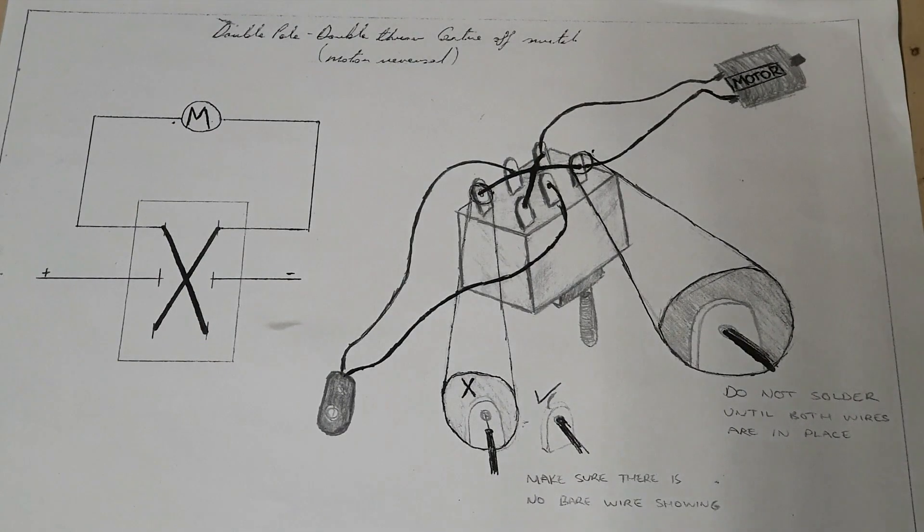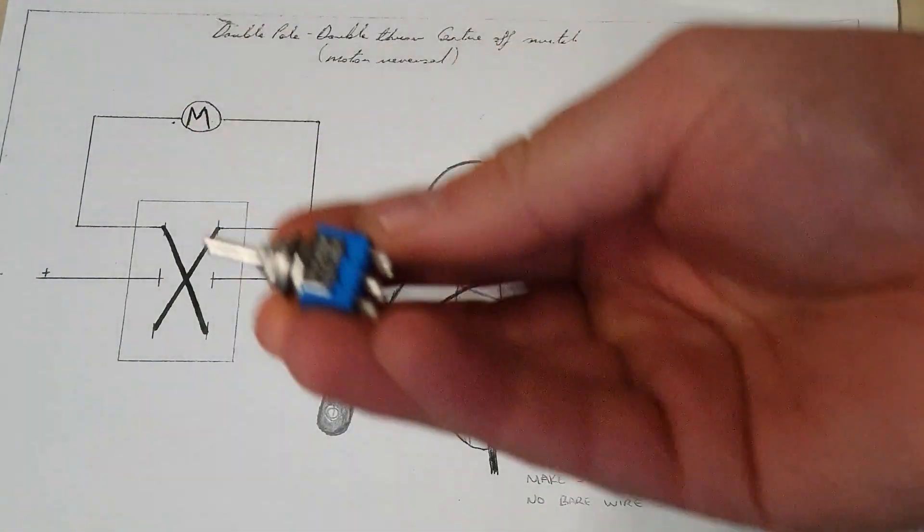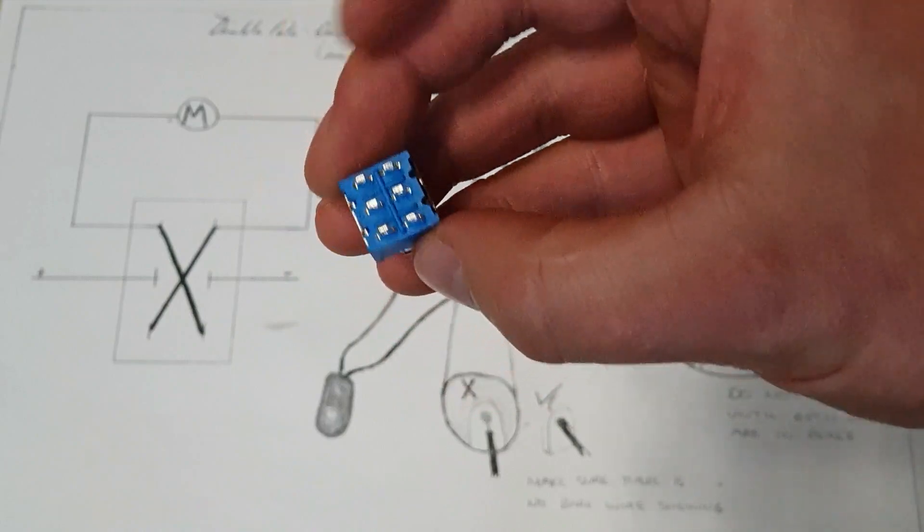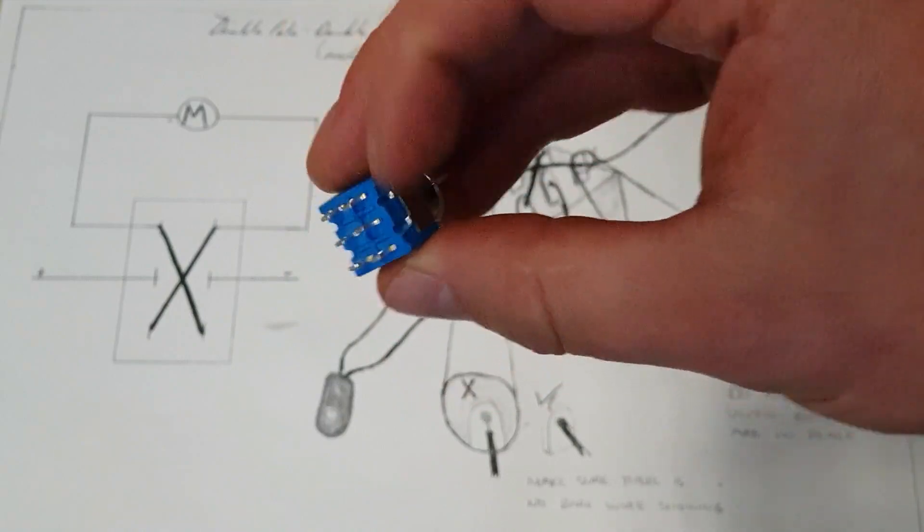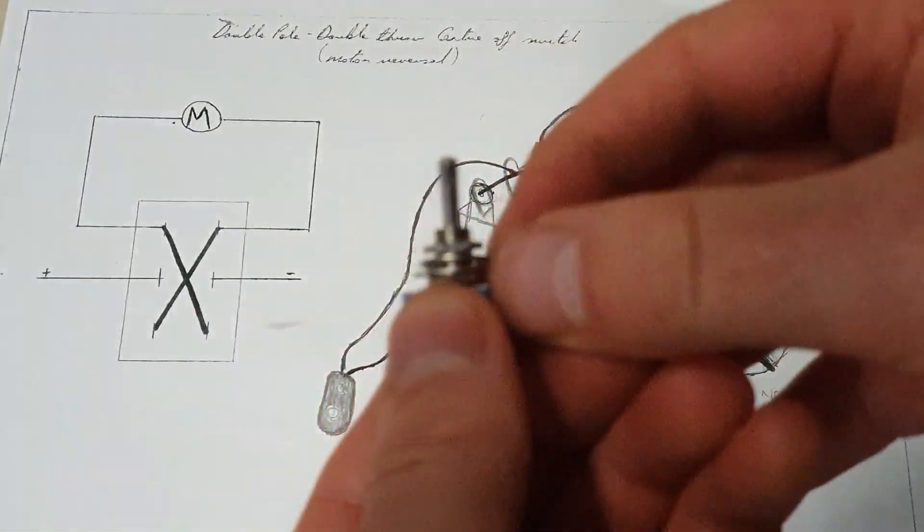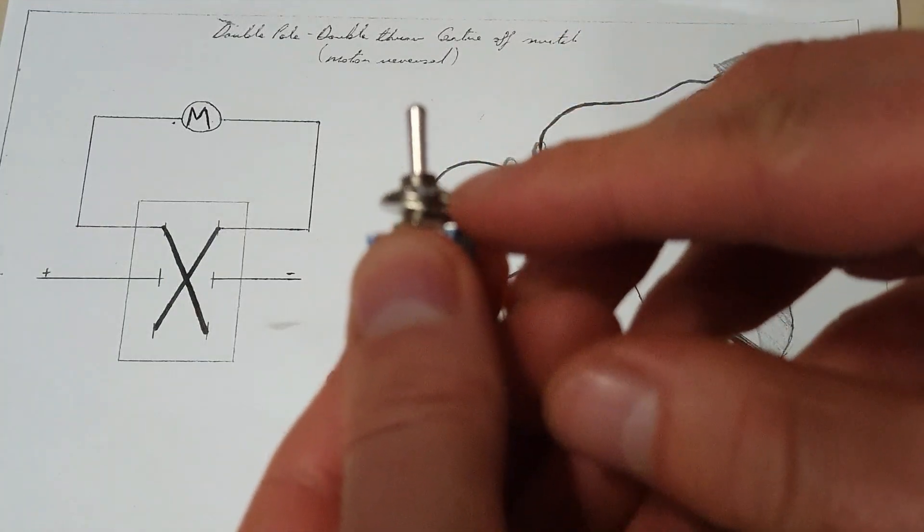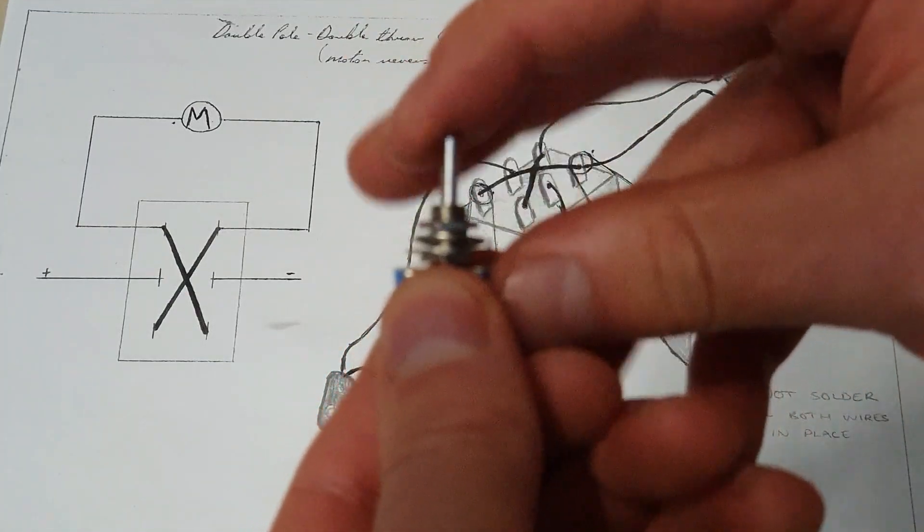So this is basically a motor reversal switch and it's used in quite a lot of applied technology projects and engineering projects. So it's a switch that looks like this. It has six contacts at the bottom. And what it means by double pole, double throw, center off is that when the switch is in the center, it's in the off position.